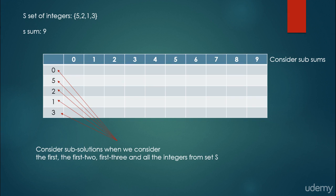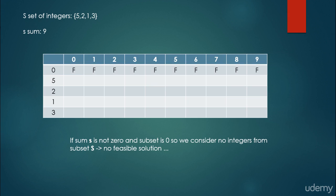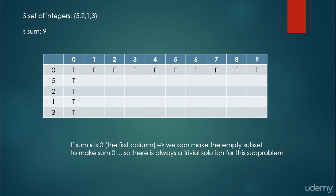Why is this good? Because these sub-problems can be computed quite fast, and we just store them in the table. Any time we try to solve the problem, overlapping sub-problems are not recomputed — we just look them up in the dynamic programming table. If the sum S is not 0 and the subset is empty (we consider no integers), there is no feasible solution, so the first row is false. The first column is true, because we can always make the empty subset sum to 0 — that is a trivial solution.